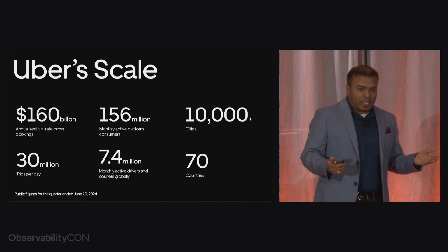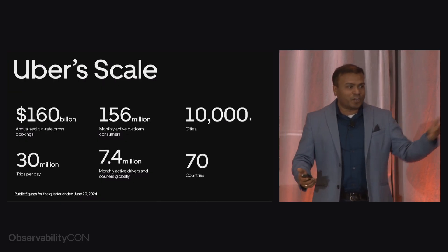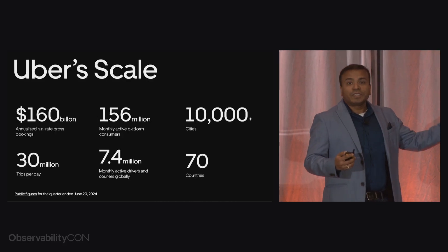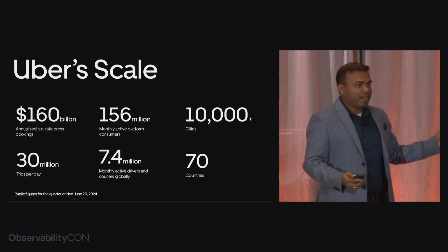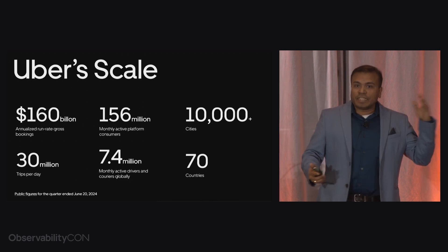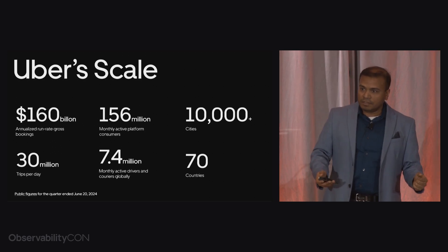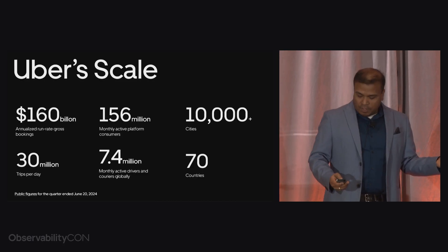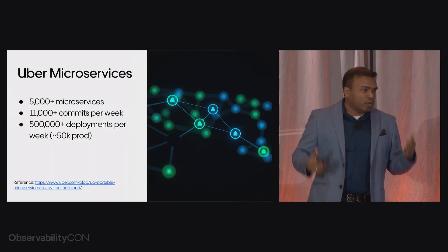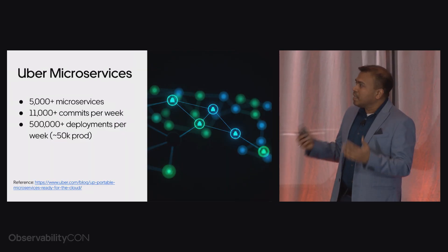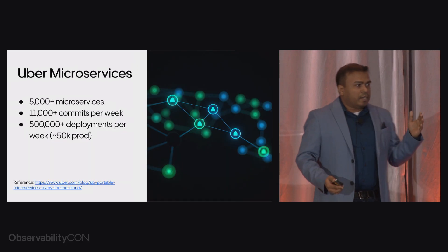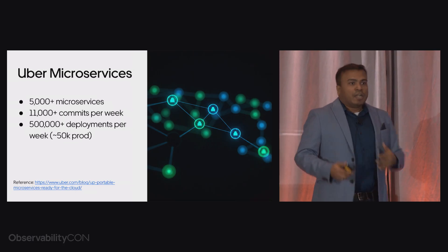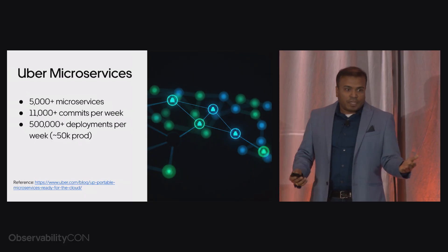So let's talk about Uber scale. Many of you might have taken Uber to come here to this conference. What is mind-boggling about Uber is that Uber serves 30 million such physical trips every day, and we do it across over 10,000 cities in over 70 countries. All of this is available on your fingertip in the Uber mobile app, but powering all of that is our Uber microservices. We have over 5,000 microservices and over 11,000 commits land every week, deployed over half a million times every week.